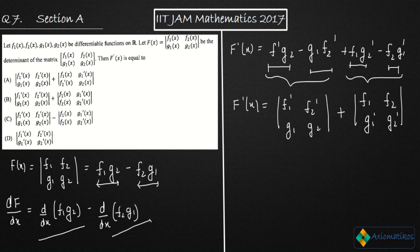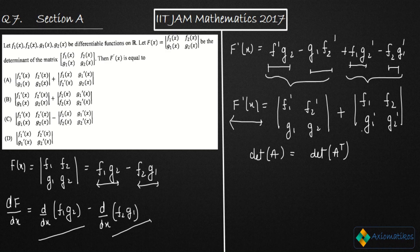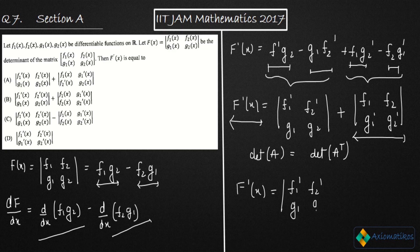No option directly matches this form, so you have to use the property that the determinant of a square matrix A equals the determinant of A transpose. Applying this property, F'(x) equals the determinant of [f1', f2'; g1, g2] plus the determinant of [f1, g1'; f2, g2'].